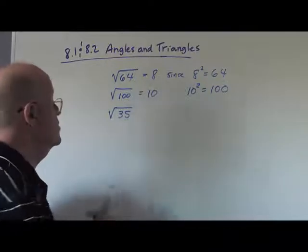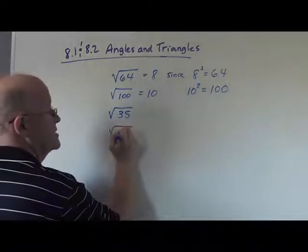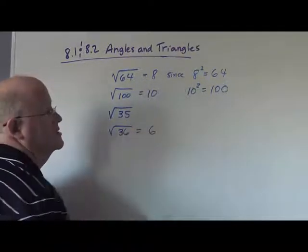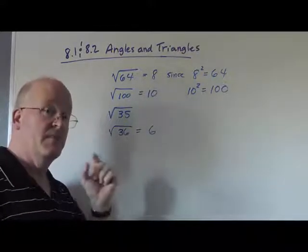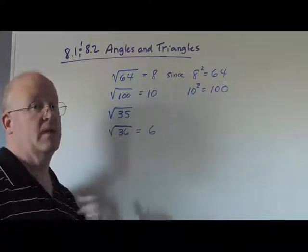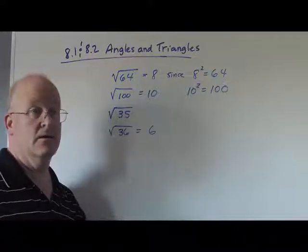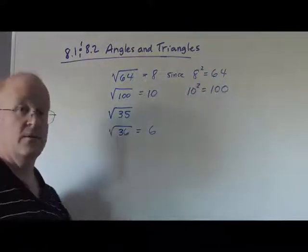We know that the square root of 36 is equal to 6. So we can estimate that the square root of 35 will be just under 6. But we'd either have to use a calculator or just leave it in radical form.